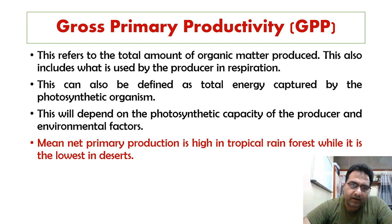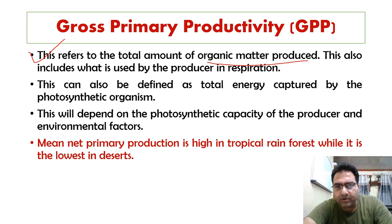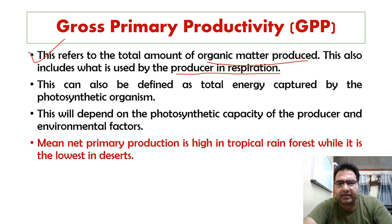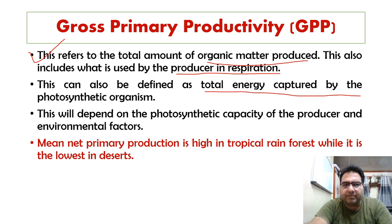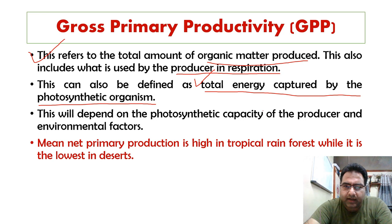Gross primary productivity refers to the total amount of organic matter produced. This includes the energy also used by the producer in respiration. It can also be defined as the total energy captured by the photosynthetic organisms, and it will depend on their photosynthetic capacity.